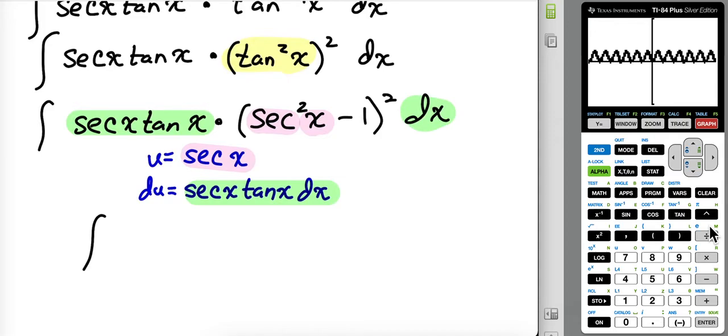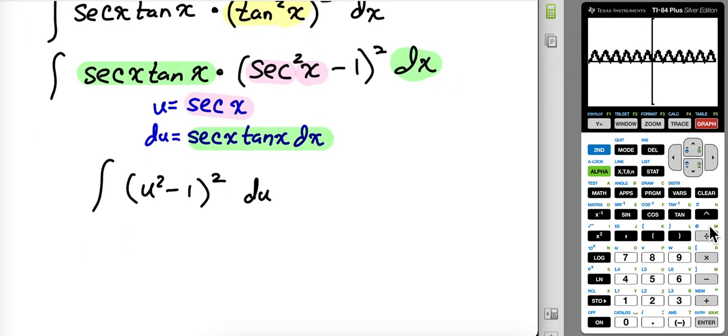Anything highlighted in green is going to get replaced with a du. We'll have u squared minus one squared, which we could actually distribute. Maybe we wouldn't want to distribute it when it's got the secant in there, but using u squared, it actually looks a little bit more appealing. So u squared minus two... Right off the bat, I screwed that up. U to the fourth.